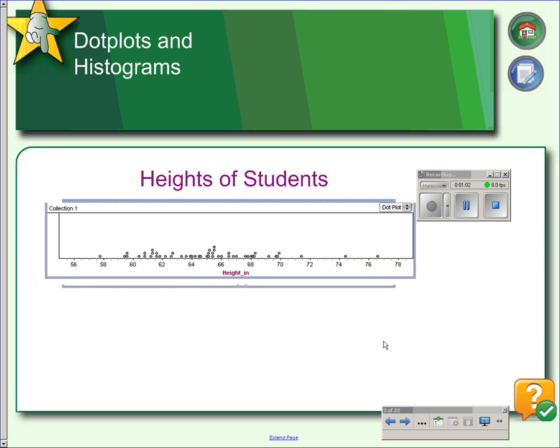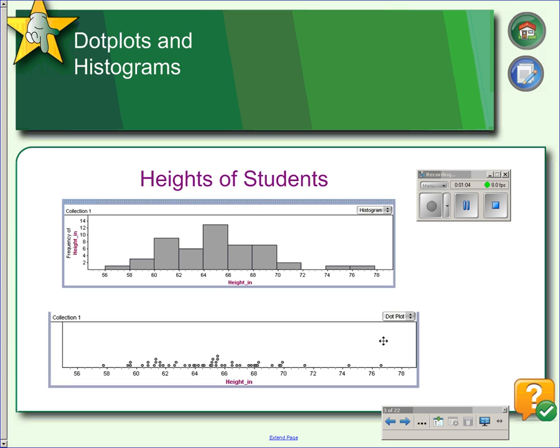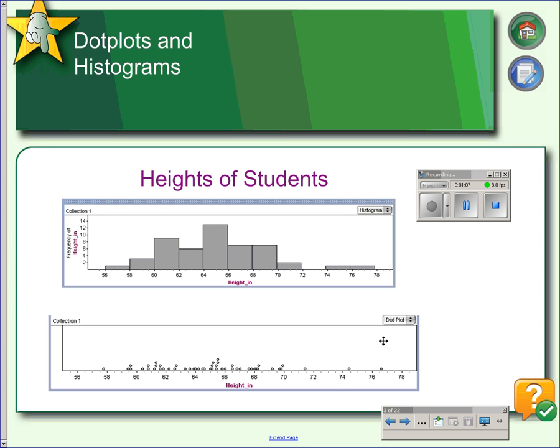Histograms are similar to bar charts. Here's an example. But they are specifically for quantitative data rather than categorical data. As with bar charts, the possible values of the variable are plotted on the horizontal axis, and the frequencies are expressed as the heights of the bars.